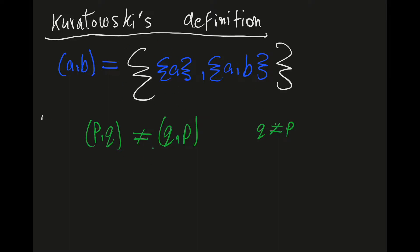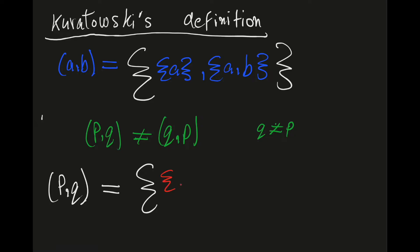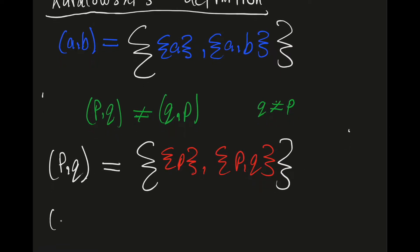So if this definition preserves this property, then it is a viable candidate for the definition of an ordered pair. We can check by writing (p, q) and (q, p) according to Kuratowski's definition. So (p, q) can be written as the set containing {p} and {p, q}, and similarly (q, p) can be written as the corresponding set according to Kuratowski's definition.